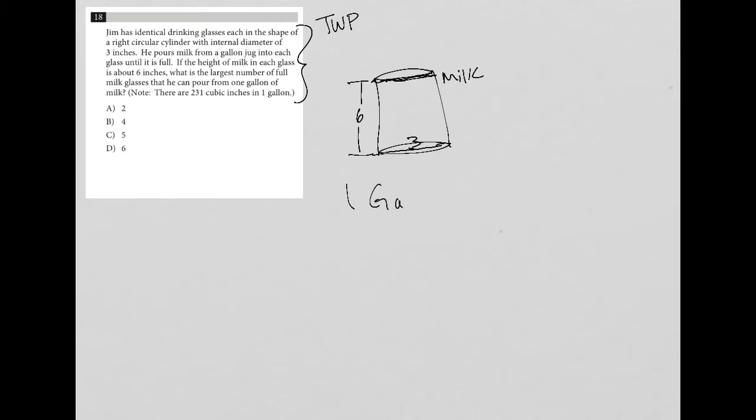So one gallon, based upon the note, is equal to 231 cubic inches, which I'll just write as inches cubed.